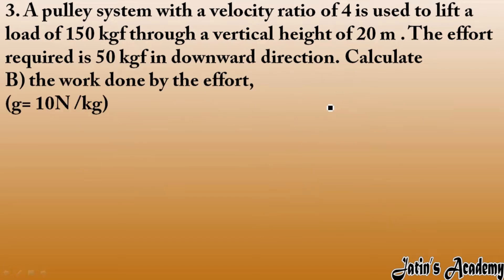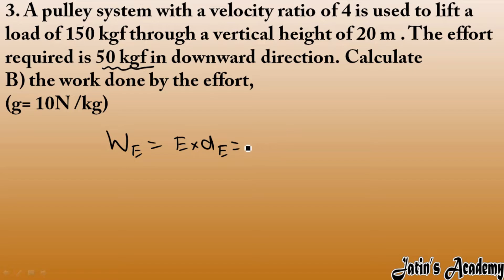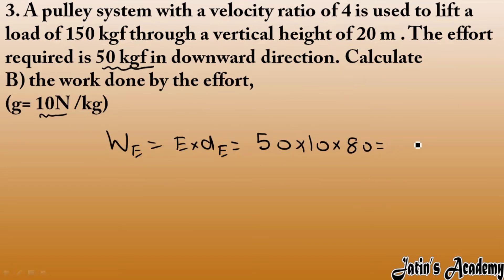Next, we calculate the work done by effort. Work done by effort equals effort multiplied by displacement of effort. The effort is 50 kgf, which we convert to Newtons by multiplying with g, and the displacement of effort is 80 m. So work done equals 50 × g × 80, giving us 40,000 joules, that is 40 kilojoules.